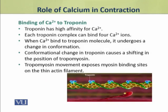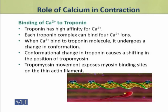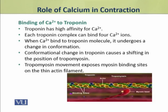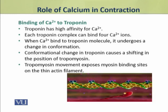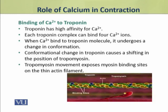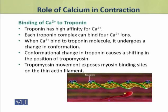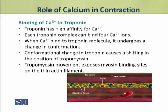Troponin has high affinity for calcium ions. Each troponin-tropomyosin complex can bind 4 calcium ions. When these calcium ions bind to the troponin molecule, as a result, troponin undergoes a change in its conformation.